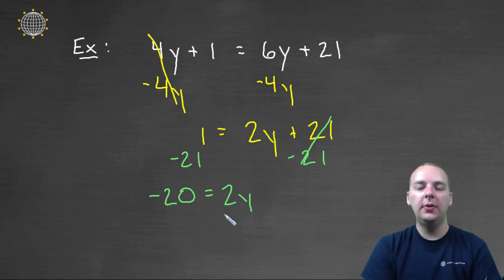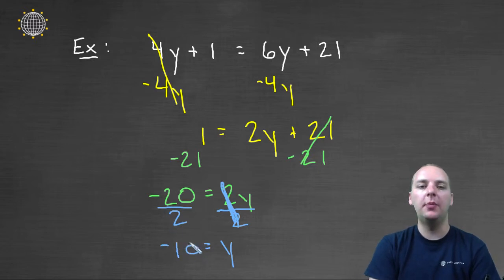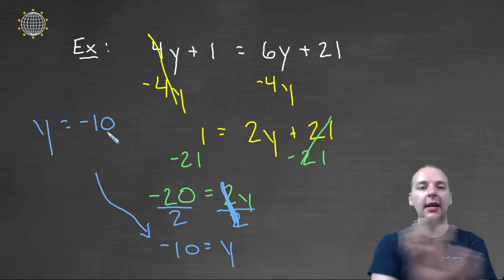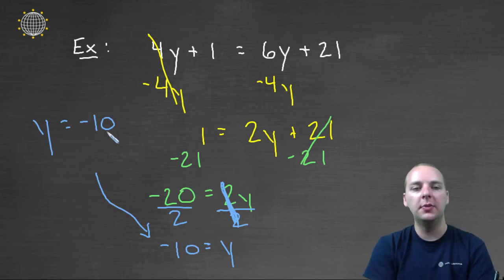The last step would be to divide by the variable's coefficient. So we'll divide this side by 2, and we'll divide this side by 2. This is going to cancel the coefficient. And so our final answer would be y = -10. That's -20 divided by 2. Now the way we typically like to leave our answer is with the variable listed first. y = -10 is the same as -10 = y. If a = b, then b = a. The order doesn't matter. So this is how we would leave our final answer.